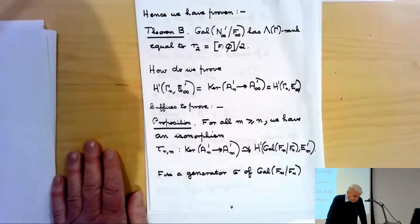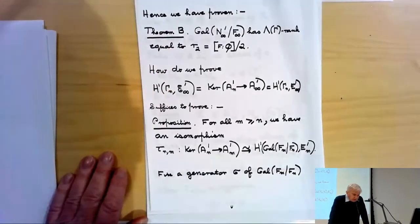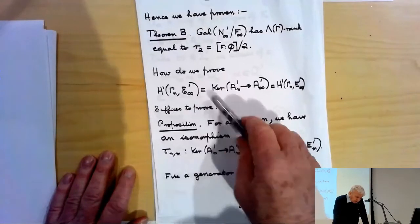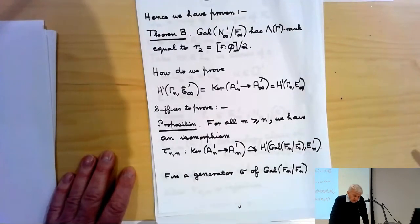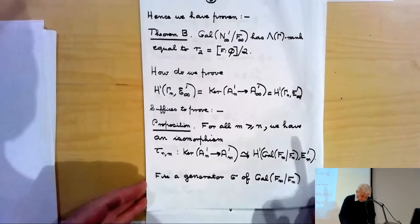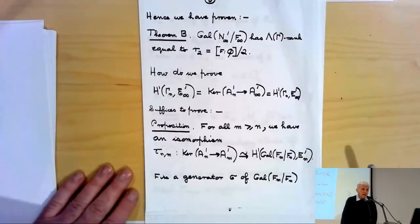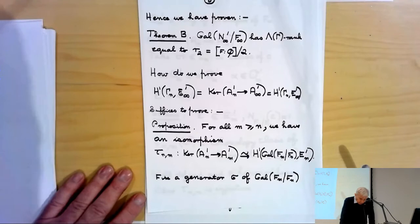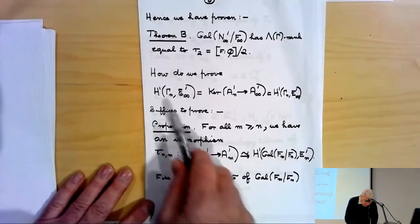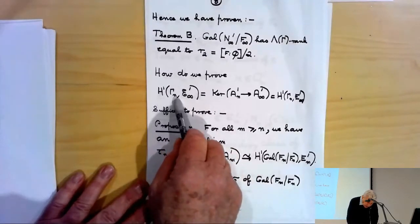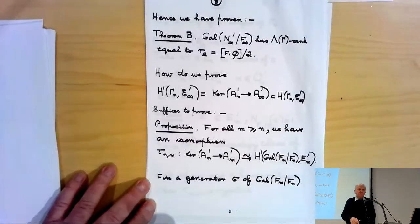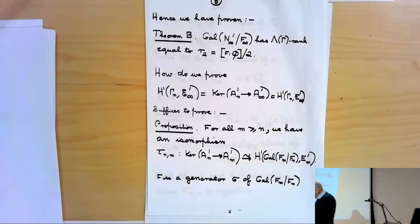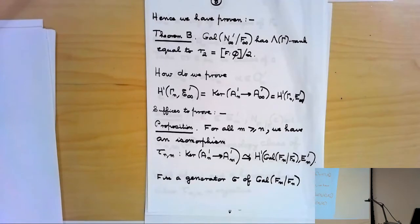This proves Theorem B, subject to the proposition that H^1(Γ_n, E∞') equals the kernel of A_n' → A∞'. I now want to explain the proof of this statement. We can switch between curly E∞' and E∞' since it makes no difference, and everything follows if we can prove it for A_n' → A_m' for all m ≥ n, then pass to the inductive limit.